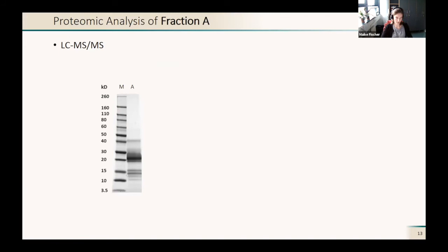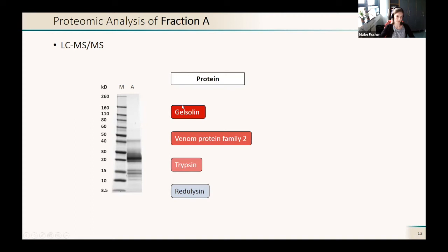We wanted to find out what proteins are present in our active fraction. I will show you the proteomic analysis of fraction A. Here again, the SDS page of this fraction. We found four main protein classes: first the gelsolin family, then a venom protein family 2 family, a lot of trypsins, and we found so-called redilysins.